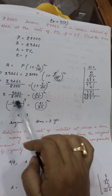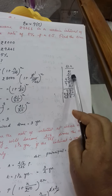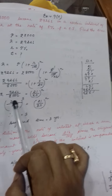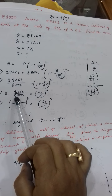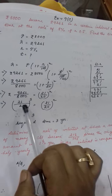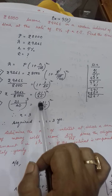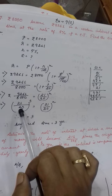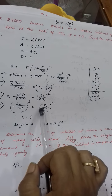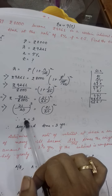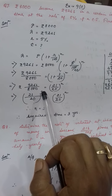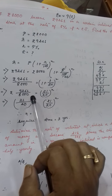You need to express 9261 and 8000 with the base 21 by 20. If you multiply 21 three times you get 9261, so 21 cubed is 9261, and 8000 is 20 cubed. Now both sides have the same base 21 by 20. According to the exponent rule, if bases are equal then powers are equal — so n equals 3. Therefore the time is 3 years. In this way we can find the time by making the base the same on both sides.